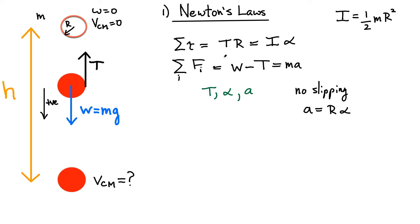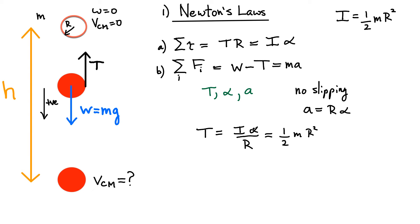Now we have a third equation linking these three variables, so we can do some math to solve them. Let's call the torque equation A and the force equation B. If I isolate tension from equation A, it's the moment of inertia times the angular acceleration divided by the radius. Substituting the moment of inertia as one half m r squared, and substituting alpha as the acceleration divided by the radius, the r squared on top cancels with the two r's on the bottom. At the end, we're left with tension equals one half m times a.